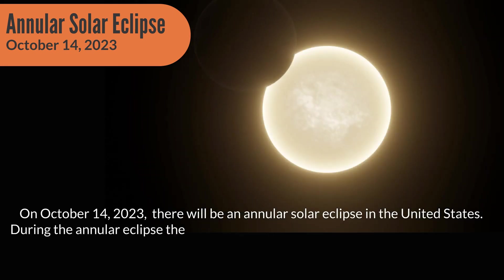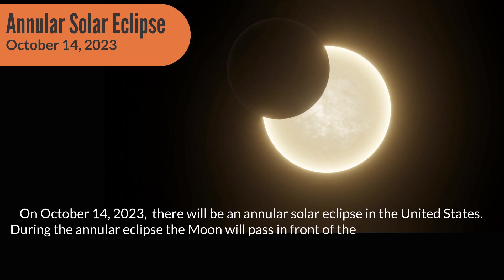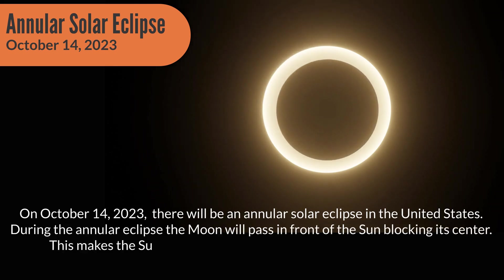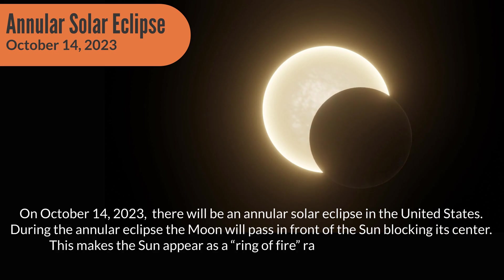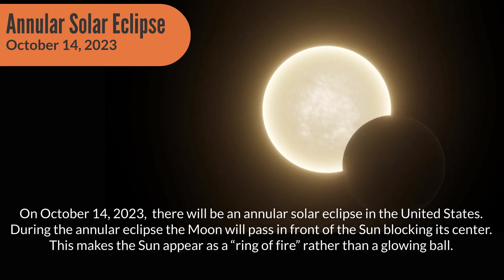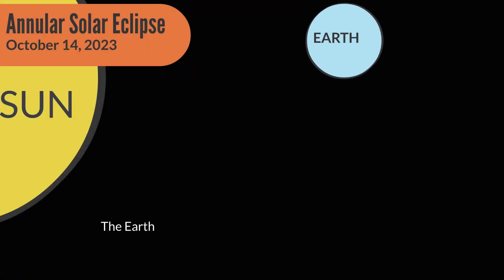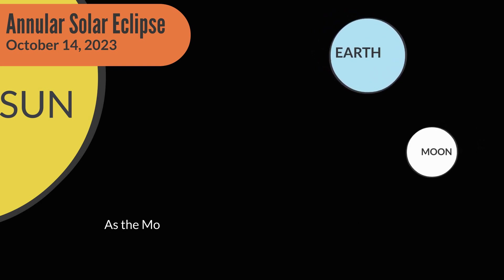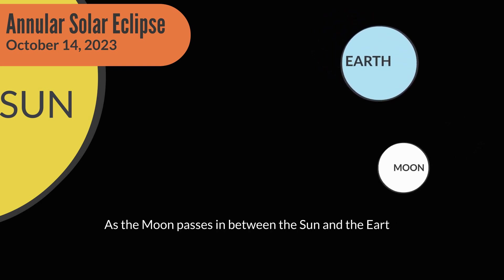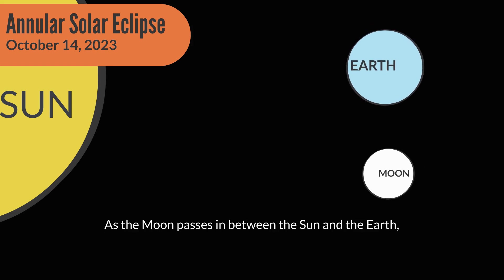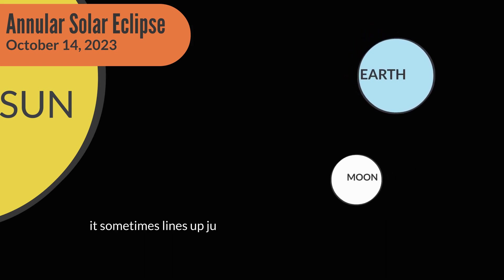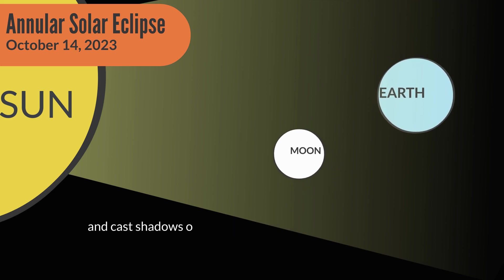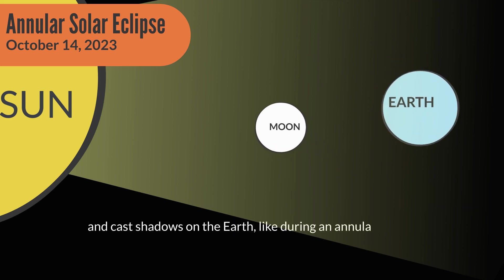During the Annular Eclipse, the Moon will pass in front of the Sun, blocking its center. This makes the Sun appear as a ring of fire rather than a glowing ball. The Earth orbits the Sun and the Moon orbits the Earth. As the Moon passes in between the Sun and the Earth, it sometimes lines up just perfectly to block the Sun's light and cast shadows on the Earth, like during an Annular Eclipse.